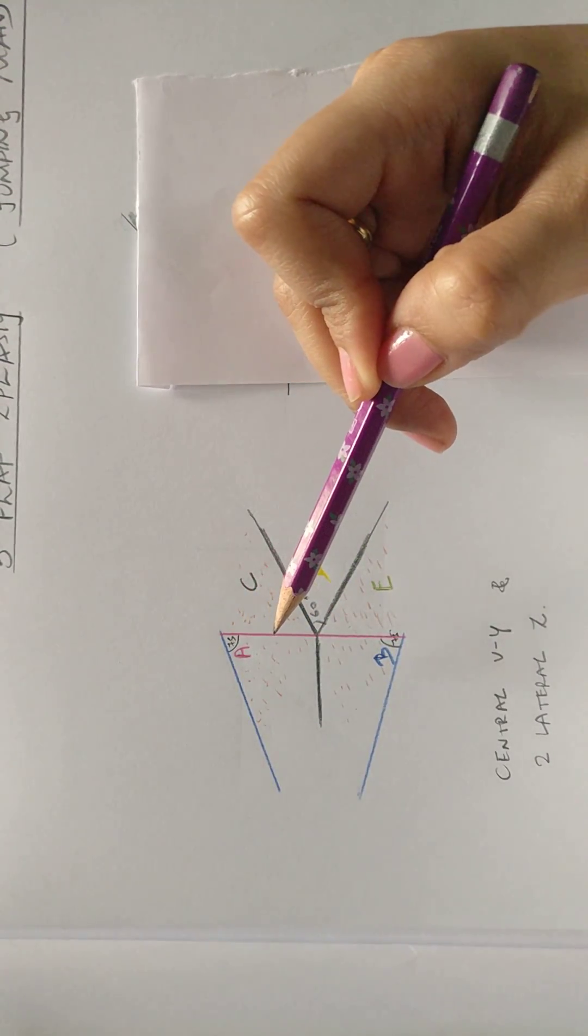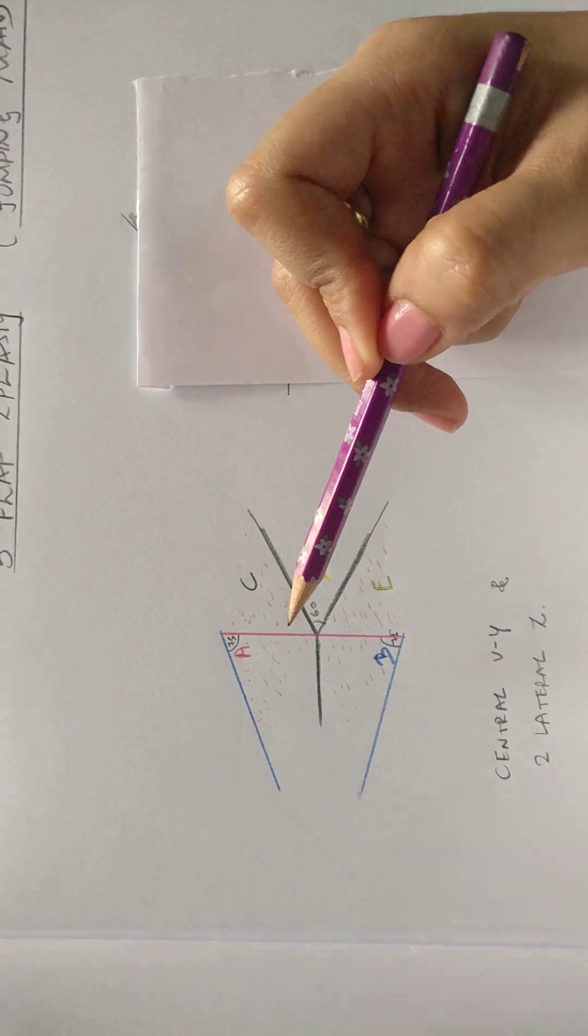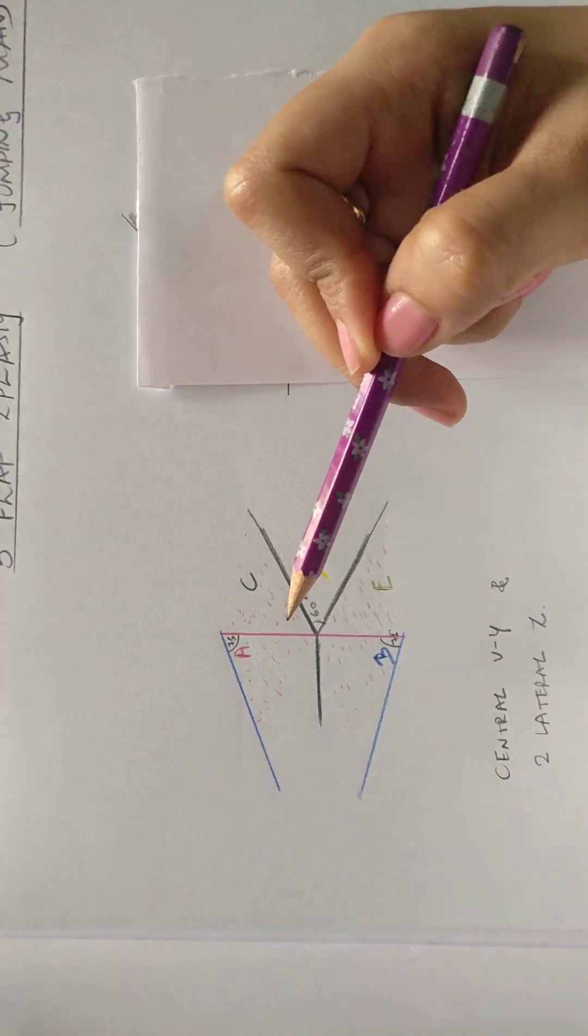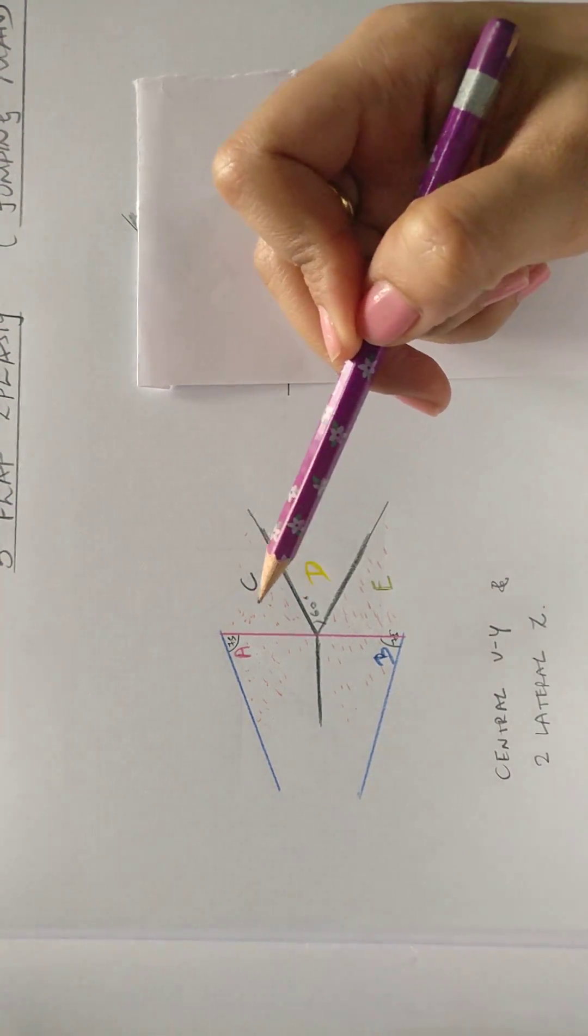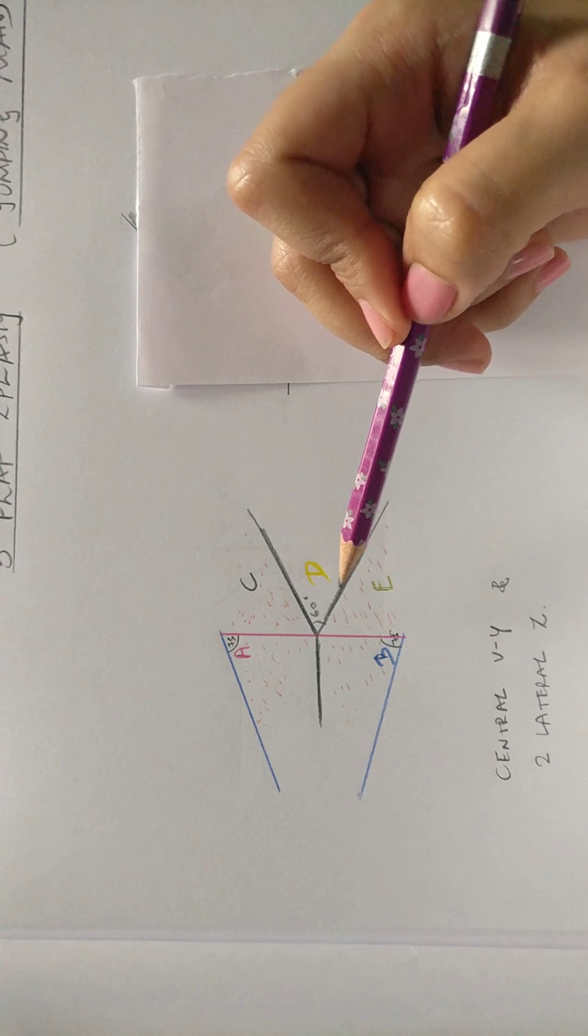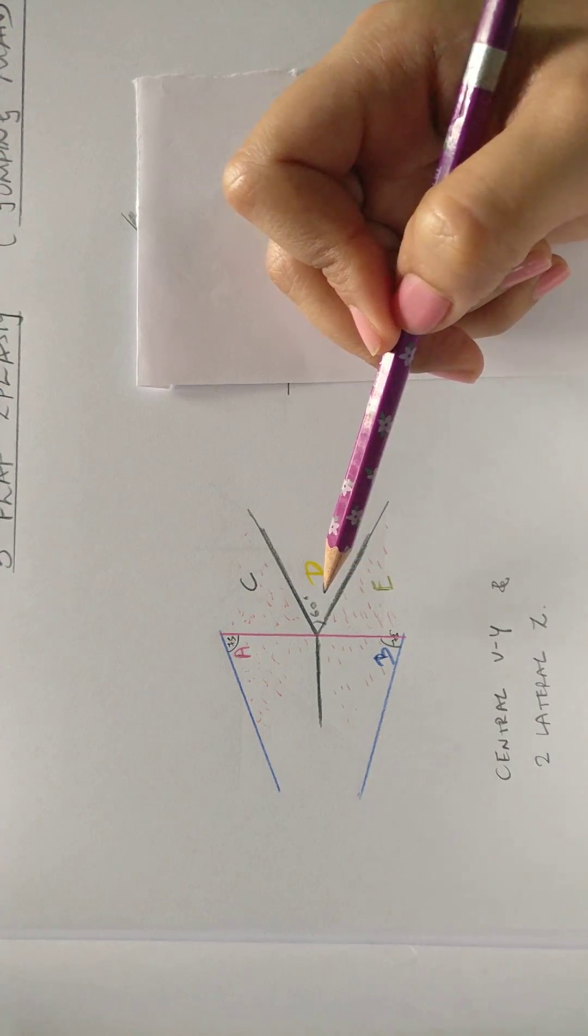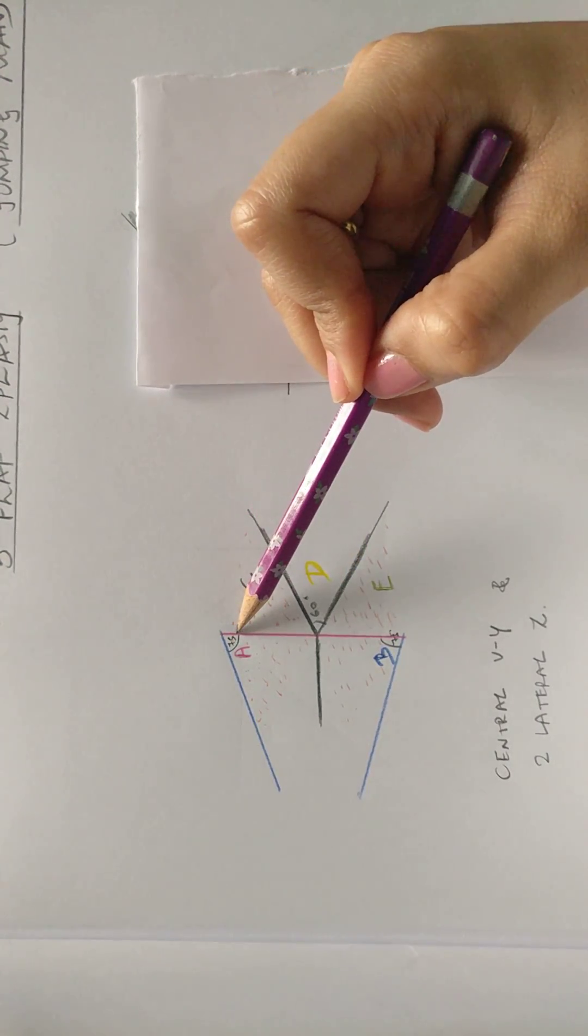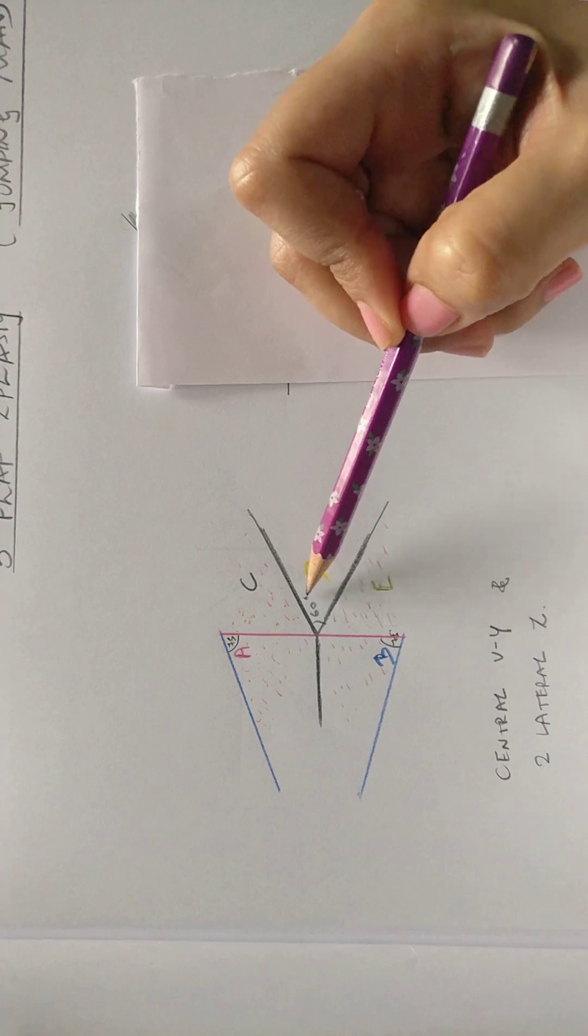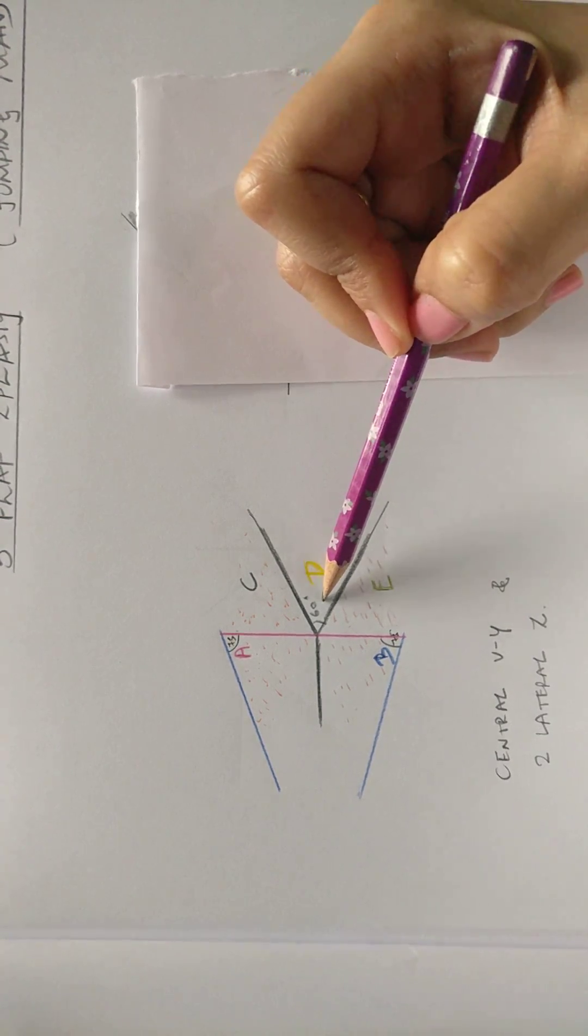Now the angles that are used can be of various degrees, which is used in an unequal Z-plasty depending on the amount of length and the tissue that is available. But certain books describe this angle as 75 degrees and the angle that will be formed by V-Y as 60 degrees.